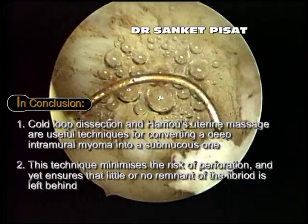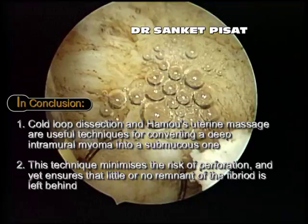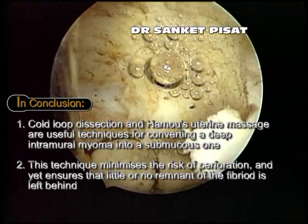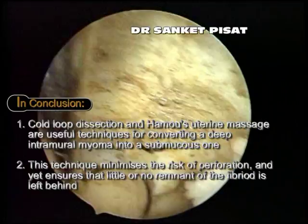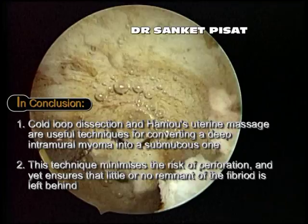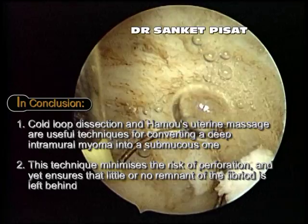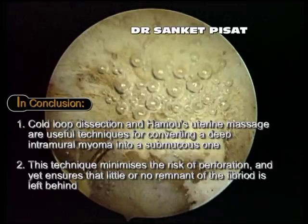In conclusion, cold loop dissection and Hamo's uterine massage are useful techniques for converting a deep intramural myoma into a submucous one. This technique minimizes the risk of perforation and yet ensures that little or no remnant of the fibroid is left behind. Using a combination of these techniques, the surgeon can convert a deep intramural myoma into a submucous myoma, thereby making resection easier, safer and quicker. As you can see, most of the fibroid bits have been removed. The last bit of the fibroid has now been excised. Thank you so much for your patience.